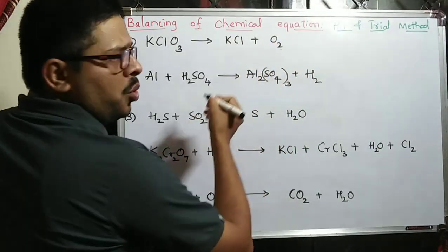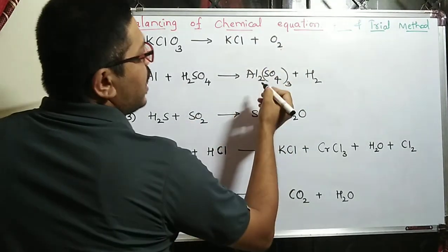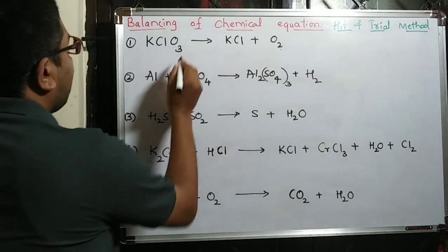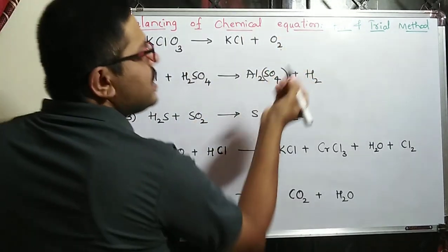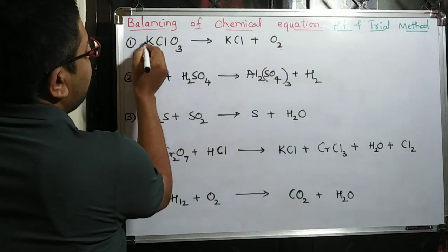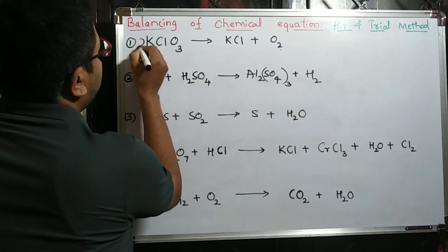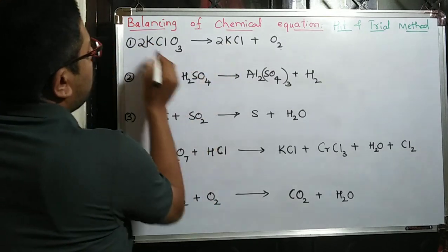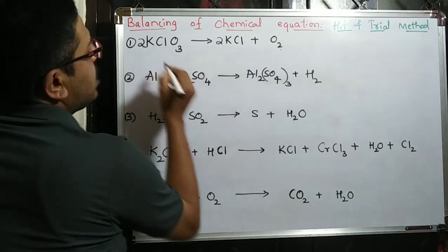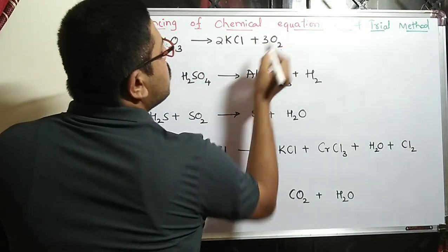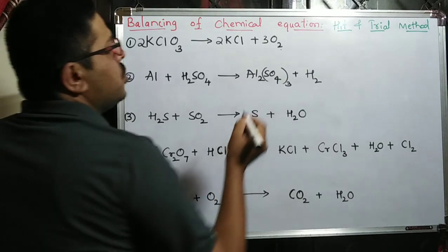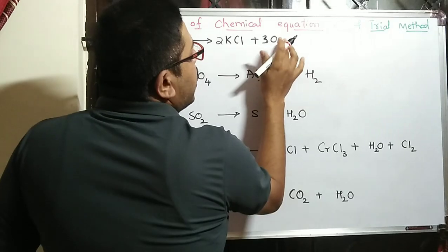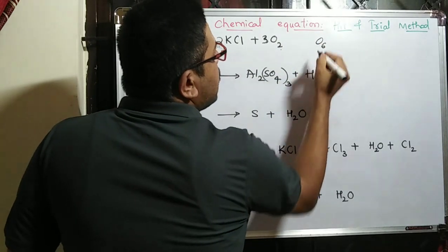When I put the coefficient 2 before KClO3, it becomes two times three, which is six oxygens. Now I write 2 before KCl: two Cl balanced. Three twos are six oxygens. So six oxygens on the left means we need 3 O2 on the right. One important point: you add the coefficient before the molecule, but you cannot change the subscript inside the formula.